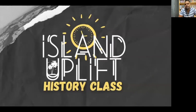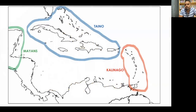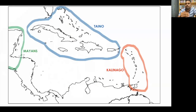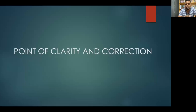Hey everyone, welcome to Island Uplift history class. This is episode two. In today's episode, we will be focusing on the indigenous people groups that were present in the Caribbean at the time of the arrival of the Spanish in 1492. Today we'll be looking at the Mayans, the Taino, and the Kalinago.